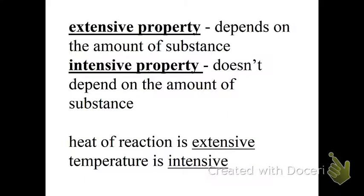Extensive properties, remember, depend on the amount of substance. Intensive properties don't depend on the amount of the substance. Depends on the identity. That's way back from Chem 1. Intensive property is identity of a substance. Like, for instance, water has a density of 1 gram per milliliter. That's an intensive property. It doesn't matter how much water I have, whether I have 100 milliliters or 200 milliliters, the density of water is the same because it's water. That's an intensive property. Extensive is how much of it you got. Like, I have 100 grams. I have 100 milliliters. Heat of reaction is extensive. That depends on the amount. Temperature is intensive.